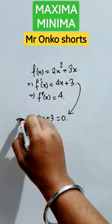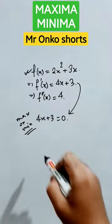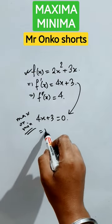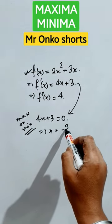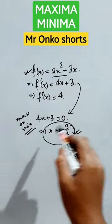Remember this. Now here we will get x equals to minus 3 by 4. So for this value of x, this function will have max or min value.